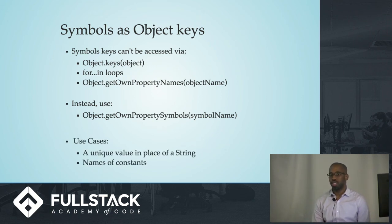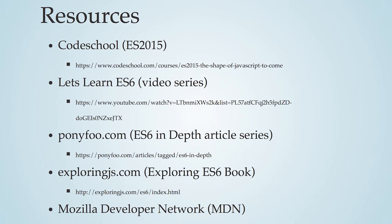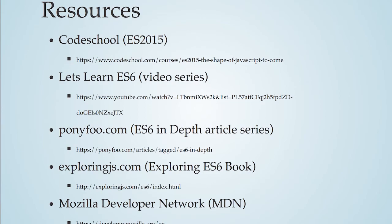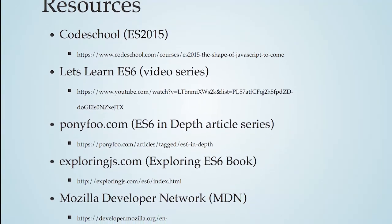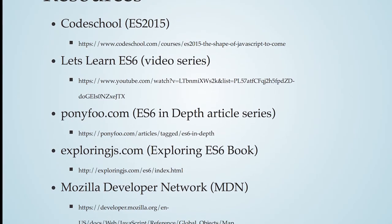Use cases for symbols: they're good when you need a key that isn't a string, a unique value that isn't a string, or if you want to name constants. For example, in React, when we have constants, you can use a symbol and feed it an optional string — and even if two people created two symbols with the same optional string, they won't be equal to each other. These are some of the resources used, so if you want to learn more about ES6, you can look at some of these. This was Maps, Sets, and Symbols by Sean Martin. Thank you.